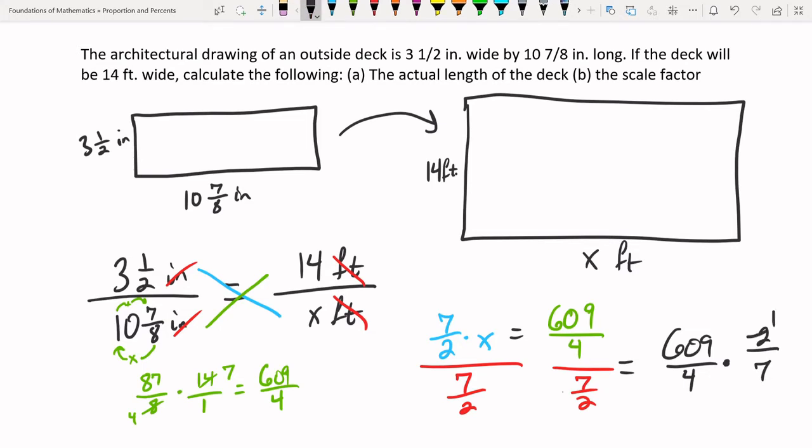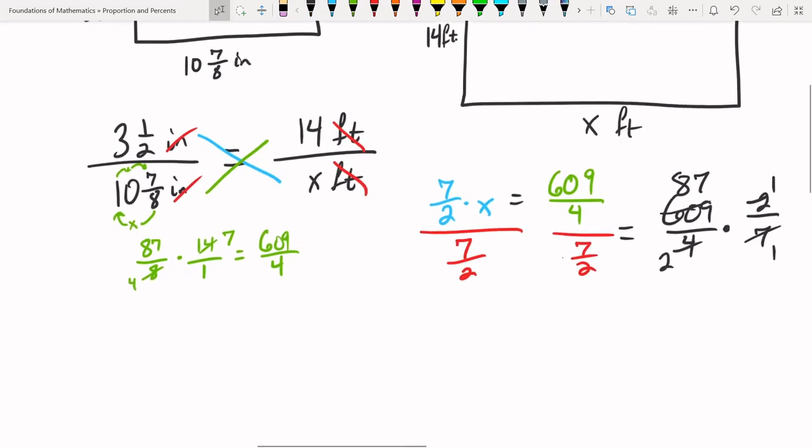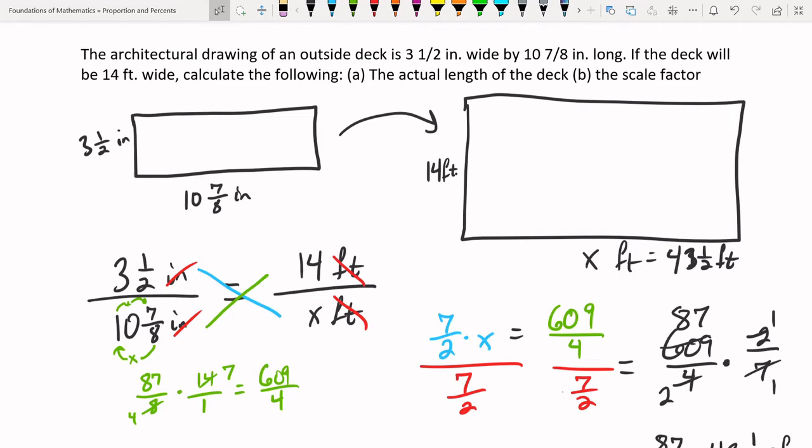So we get 609 divided by 4 times the reciprocal of the bottom becomes 2 over 7. Now we can cross-cancel. 609 divided by 7 is 87. And we get X equal to 87 halves. Or you can rearrange this into a mixed number. How many times can 2 go into 87? It can go in there 43 times. 43 times 2 is 86. We have 87 minus 86 is 1. This of course is going to be in feet. So this is 43 and a half feet. That was part A. Find the actual length.